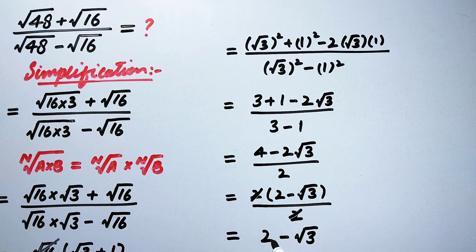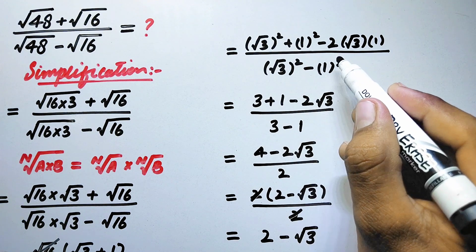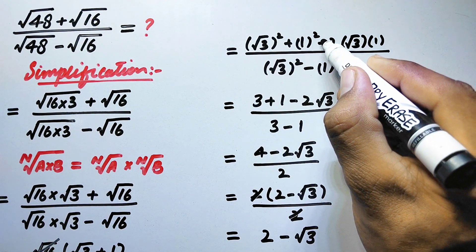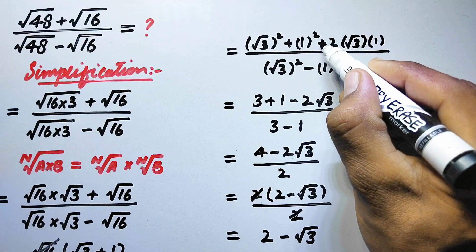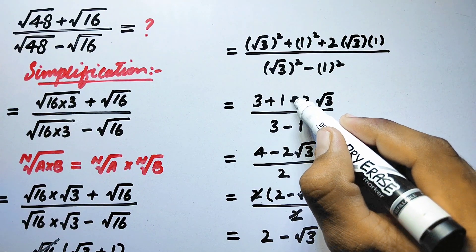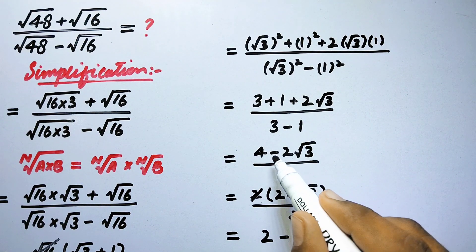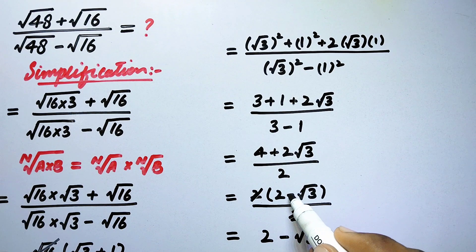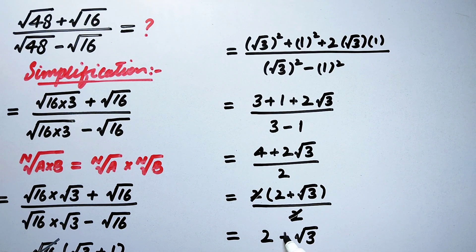The final simplification is 2 minus square root of 3 — but sorry, I made a mistake. The signs should all be plus, so the correct final answer is 2 plus square root of 3.